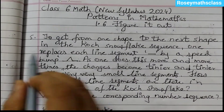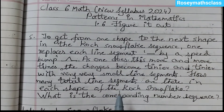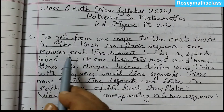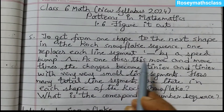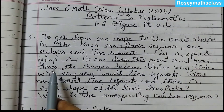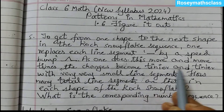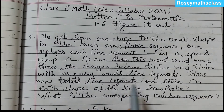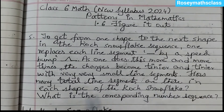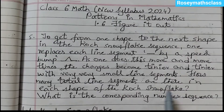Hello students, today we shall discuss question number 5 of 1.6 'Figure It Out'. We have completed till question number 4 and this is the last question of this exercise and also the chapter. To get from one shape to the next shape in the Koch snowflake sequence, one replaces each line segment by a speed bump. A speed bump is also called a speed breaker; it is used to slow down motor vehicles to improve road safety. As one does this more and more times, the changes become tinier and tinier with very small line segments. How many total line segments are there in each shape of the Koch snowflake?